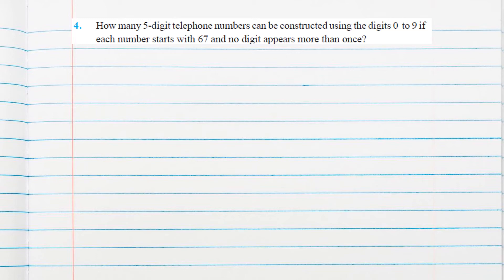Question 4: How many 5-digit telephone numbers can be constructed using digits 0 to 9, if each number starts with 67 and no digit appears more than once? That means repetition is not allowed. There are 10 digits total from 0 to 9.